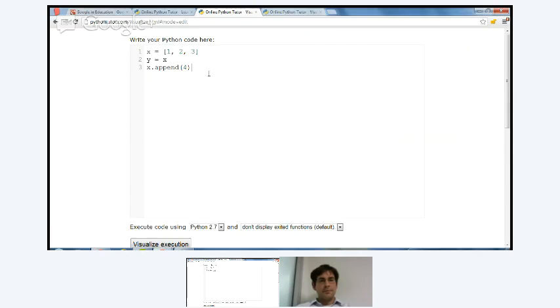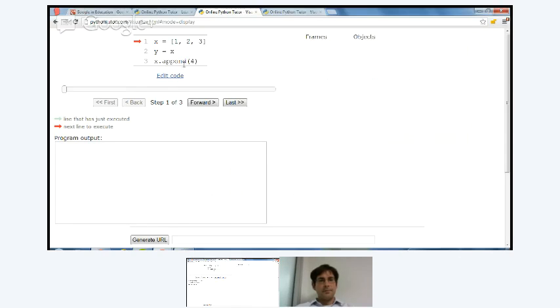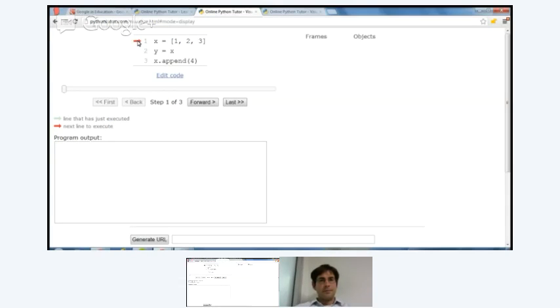And you visit that web page. And then you can write out, this is the exact same code I wrote before, right? So x equals 1, 2, 3, y equals x, x.append(4). And you write your Python code. You hit Visualize Execution. And then it brings you to this interface. So the left side shows the code. And the red arrow shows what line is about to execute. And the right side shows what objects are available.